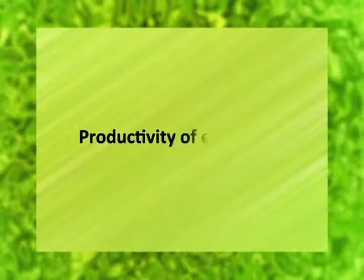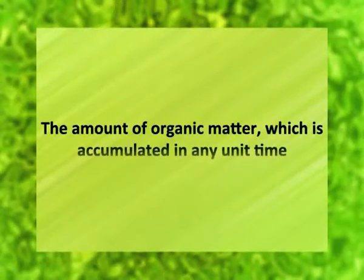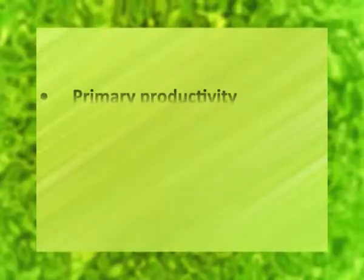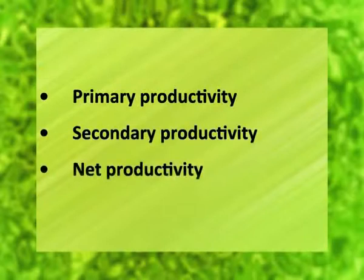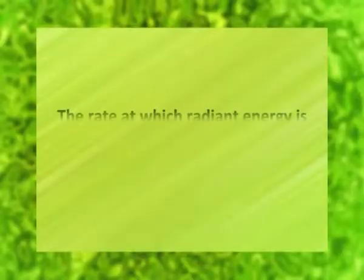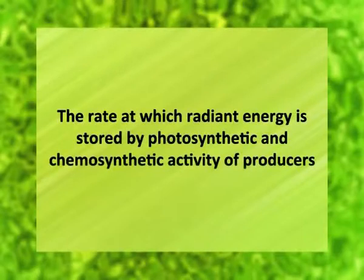First of all, we will talk about productivity of an ecosystem. The productivity of an ecosystem refers to the rate of production — that is, the amount of organic matter which is accumulated in any unit time. Productivity of an ecosystem is of three types: number one, primary productivity; number two, secondary productivity; and number three, net productivity. Primary productivity is associated with the producers, which are autotrophic. Primary productivity is the rate at which radiant energy is stored by photosynthetic and chemosynthetic activity of producers.